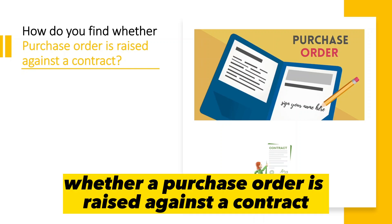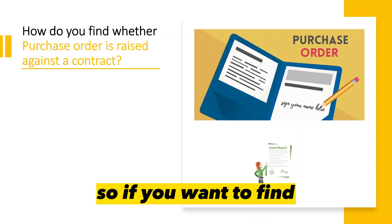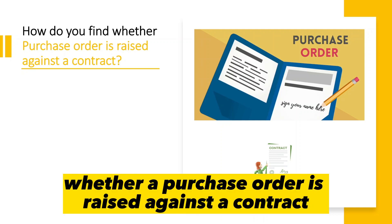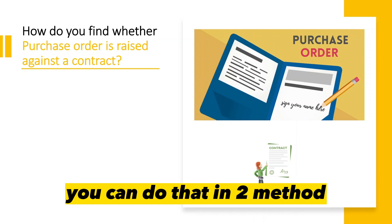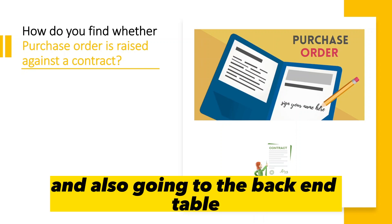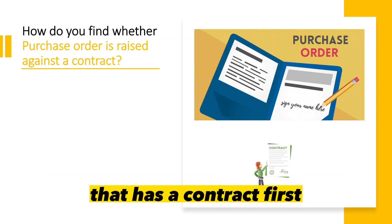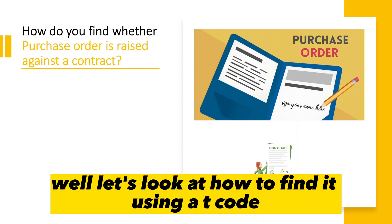How do you find whether a purchase order is raised against a contract? You can do that in two methods: one is using a T-code, and the other is going to the backend table and looking for the list of purchase orders that have a contract. First, let's look at how to find it using a T-code.